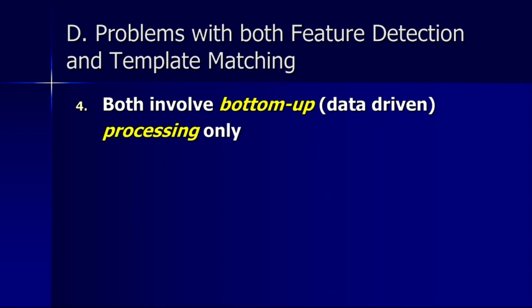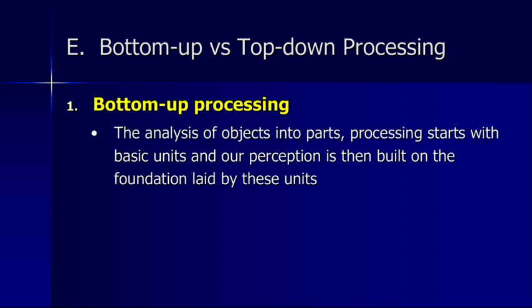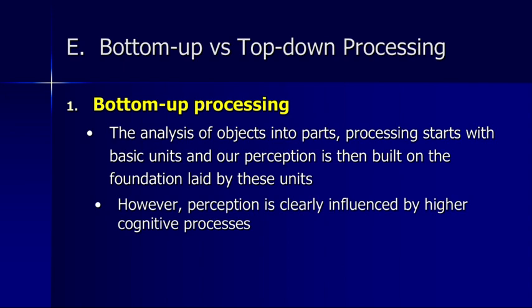Both feature theories and template matching theories lack a way to accommodate these context effects, because both involve only bottom-up or data-driven processing. Bottom-up processing occurs when we start by analyzing objects into parts — processing starts with those basic units and our perception is built on the foundation laid by these units. With bottom-up processing, we're only taking the features, putting them together into a perception, based entirely on the visual data in front of us and nothing more. But clearly perception is influenced by higher cognitive processes, and what we're missing is how our knowledge, experience, and expectations can drive perception.